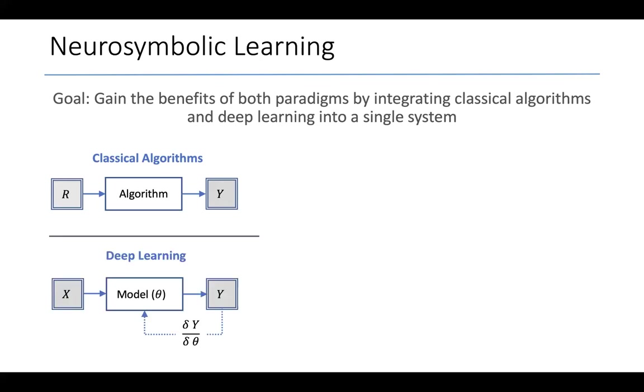Deep learning can not only take discrete inputs R, but they can also take unstructured inputs, which I'm going to denote by X. And furthermore, we have a parameter theta, which are the weights of the neural model.